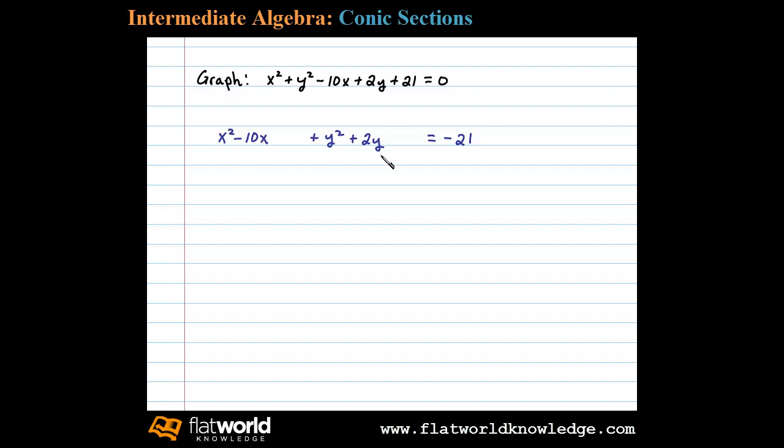Now for each of these groupings we complete the square, and remember the number that completes the square is b over 2 squared. And so for this first grouping involving x, b is negative 10, so negative 10 divided by 2 squared is equal to negative 5 squared or 25, and so we'll add 25 to both sides of this equation.